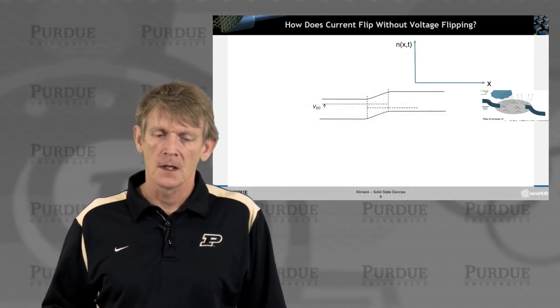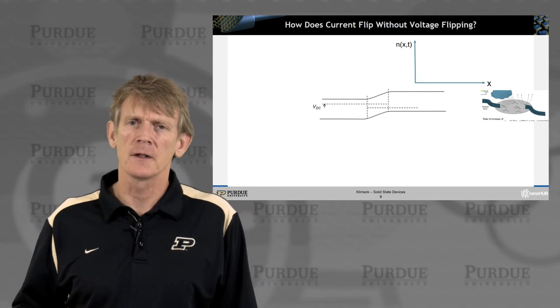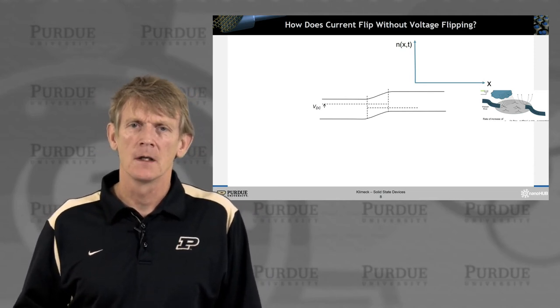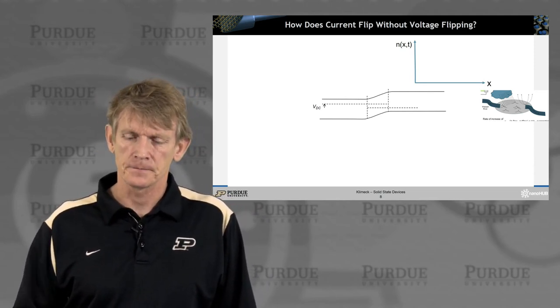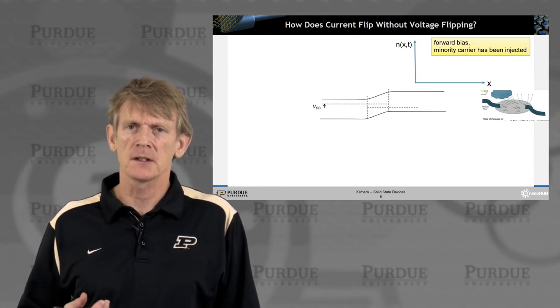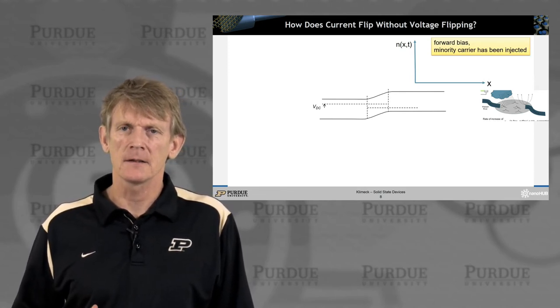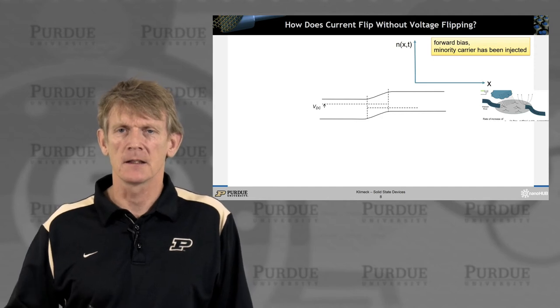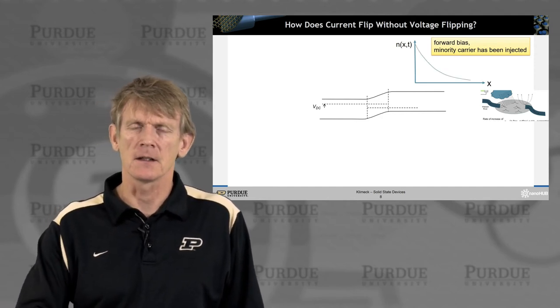So how does it happen that the current flips without voltage flipping at all? OK, so let's consider the forward bias right now. We'll start with that, and then eventually we'll switch the signal.